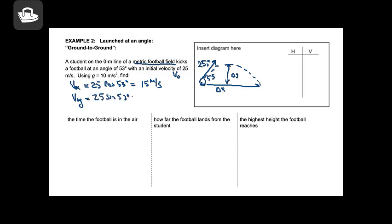If you're having trouble with degrees and radians, just double-check those numbers. The second thing we want to do is capture this information in the horizontal and vertical T-chart, just as we did for horizontally launched projectiles. In the horizontal direction, v-naught-x equals 15 meters per second. The initial velocity in the y direction is 20 meters per second. The acceleration in the y direction is minus 10 meters per second squared.